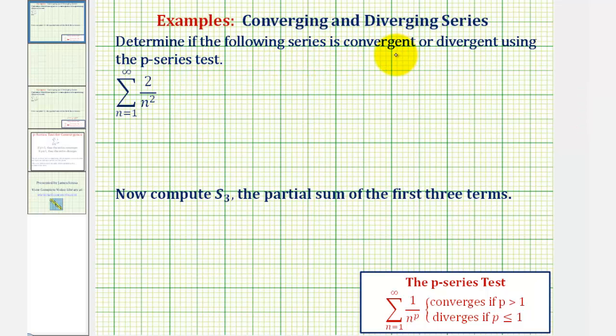Determine if the following series is convergent or divergent using the p-series test. We also want to compute s sub three, the partial sum of the first three terms.